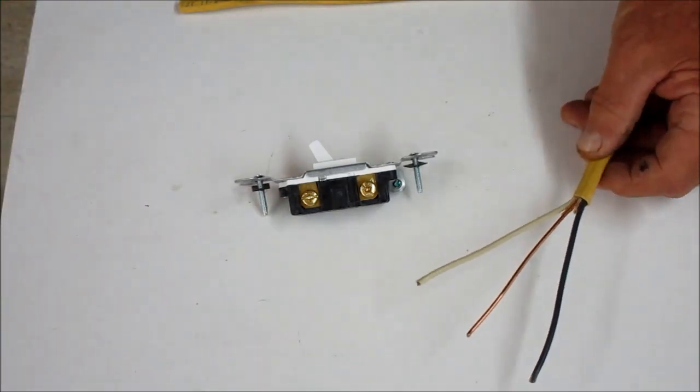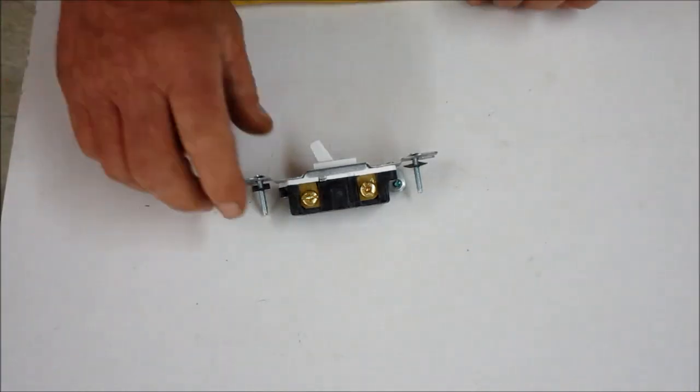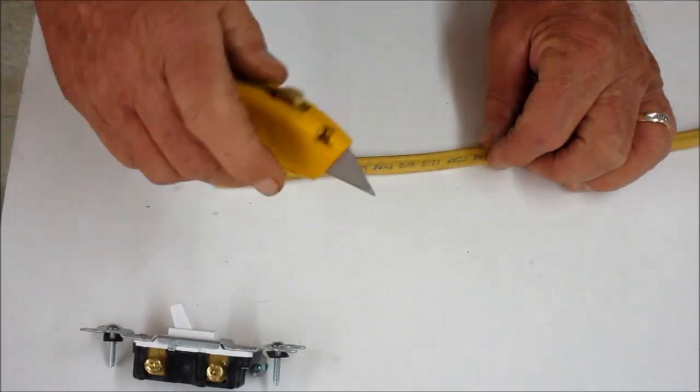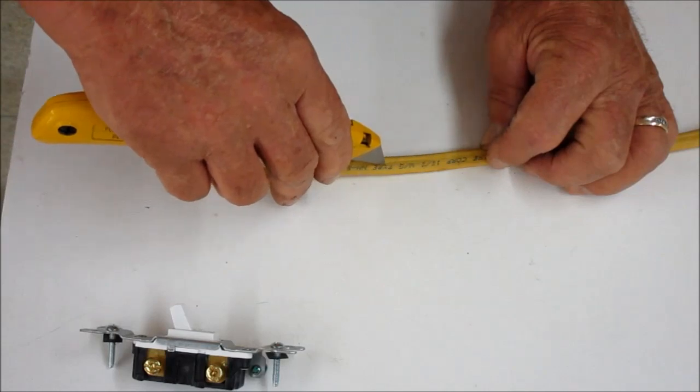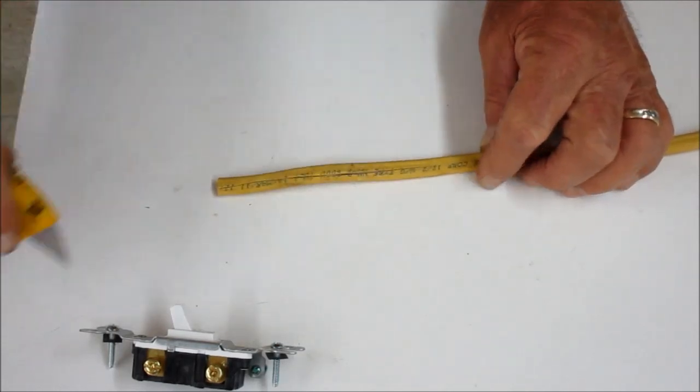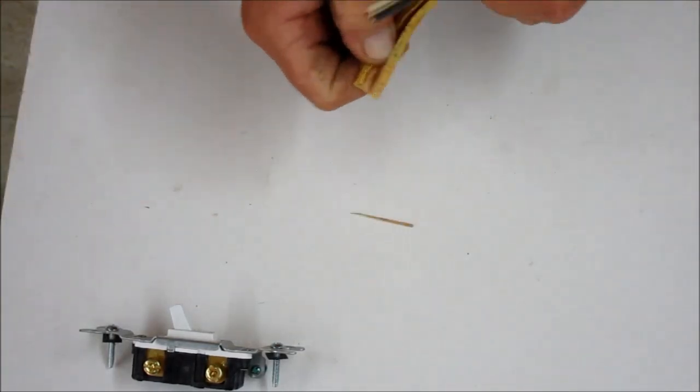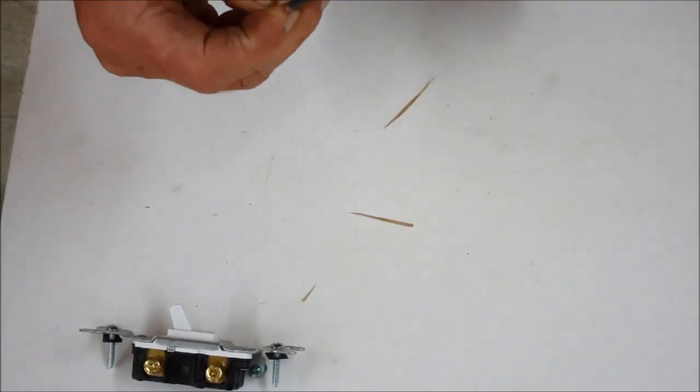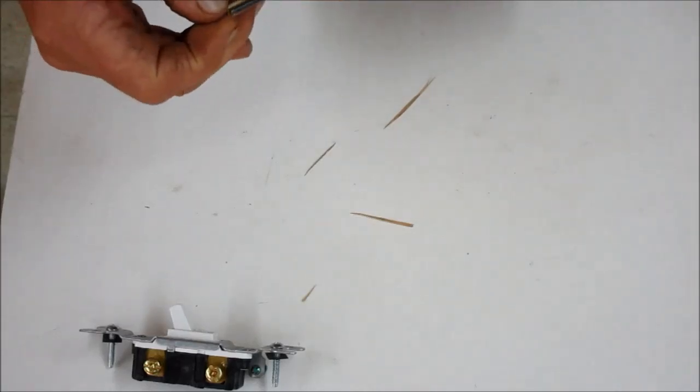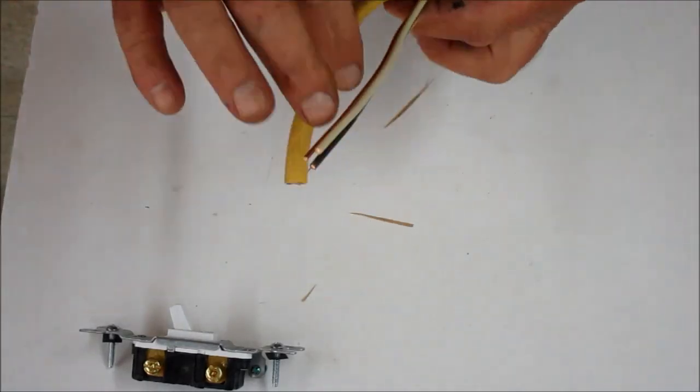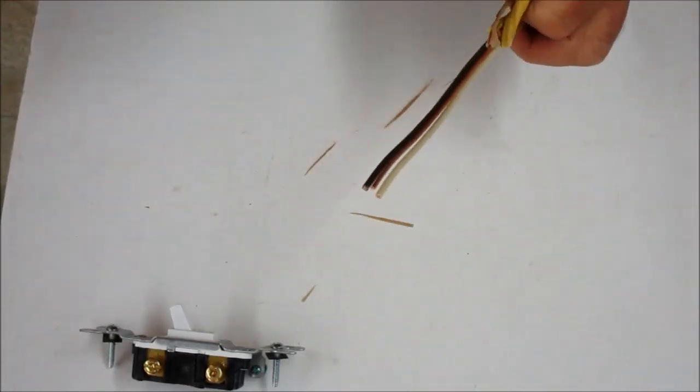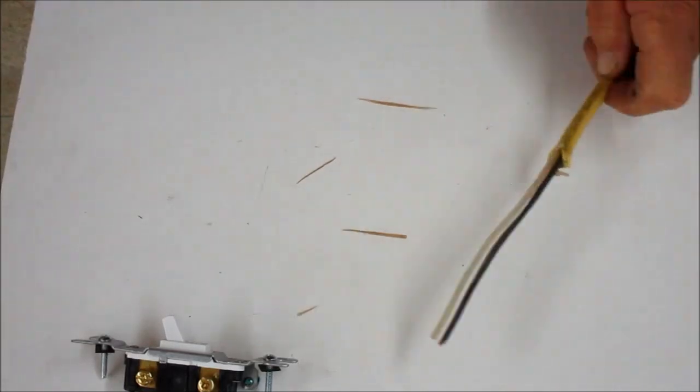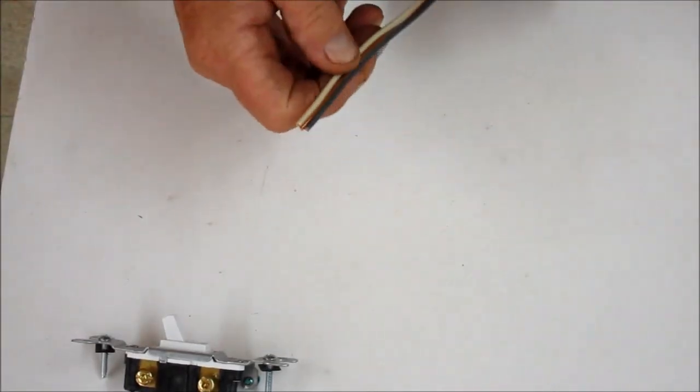We start out with actually taking a piece of wire, as you see here, regular wire. We'll trim it back. Take your utility knife, of course. We'll trim this thing back real lightly. You don't want to cut it in there too deep, because if you do, you'll cut the insulation on the actual inside wires. Peel it back.